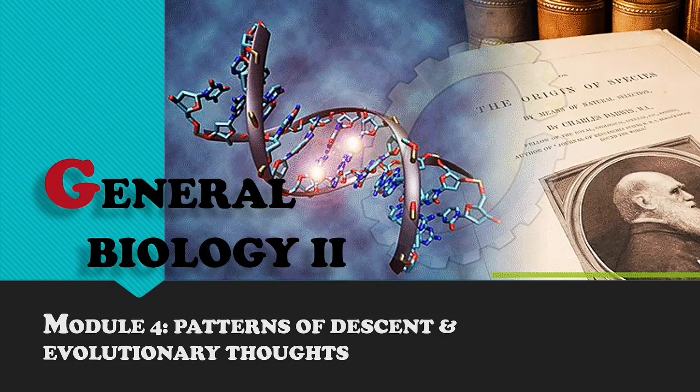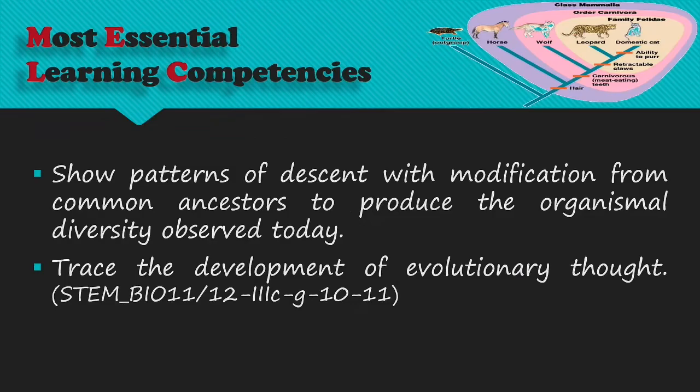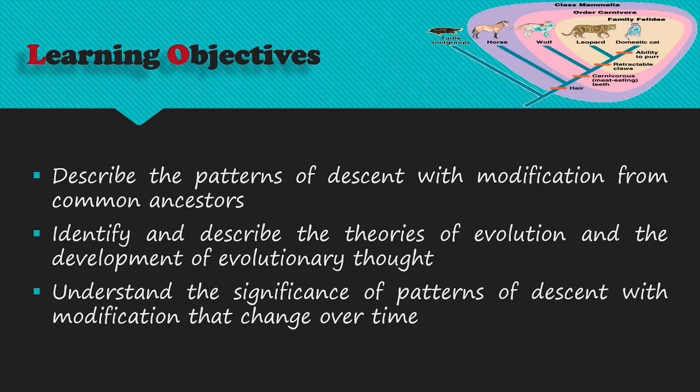Patterns of Descent and Evolutionary Thoughts. The most essential learning competencies are: show patterns of descent with modification from common ancestors to produce the organismal diversity observed today, and trace the development of evolutionary thought. For your learning objectives, you will describe patterns of descent with modification from common ancestors, identify and describe the theories of evolution and the development of evolutionary thought, and understand the significance of patterns of descent with modification that change over time.